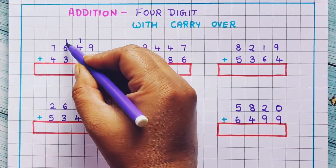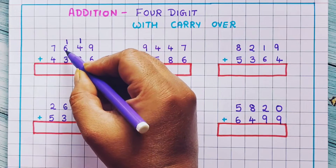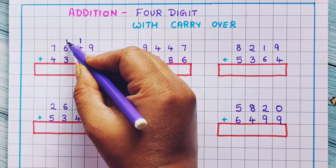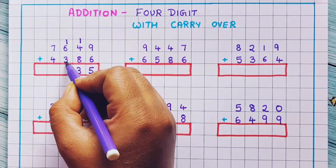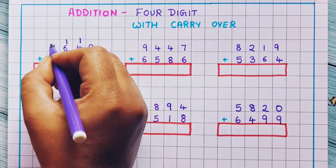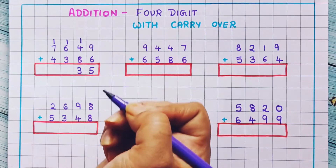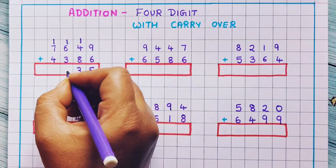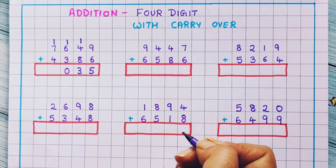Now 1 plus 6 plus 3. 6 plus 1 is 7, and 7 plus 3 is 10. So here I will write 1 as carryover and here I will write 0.